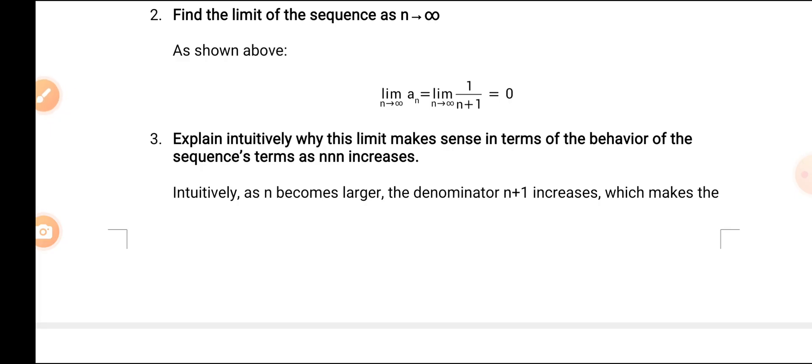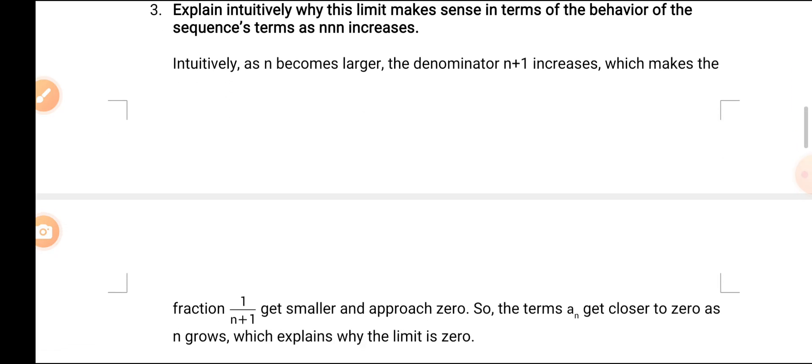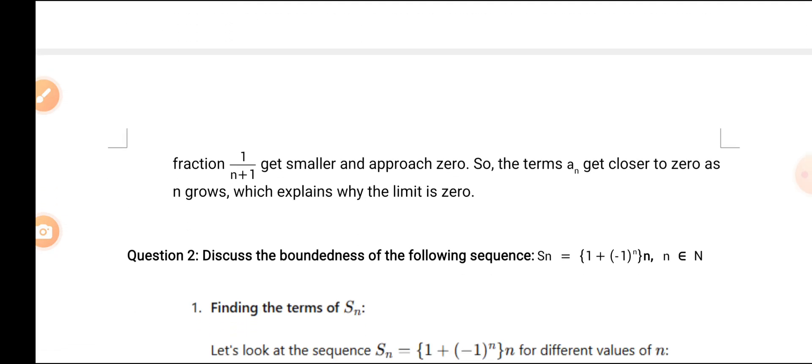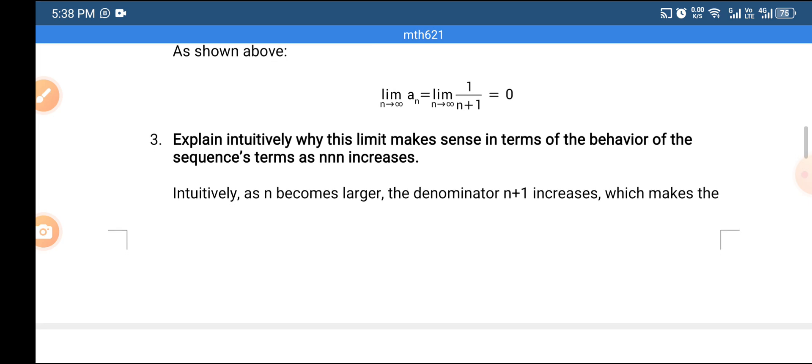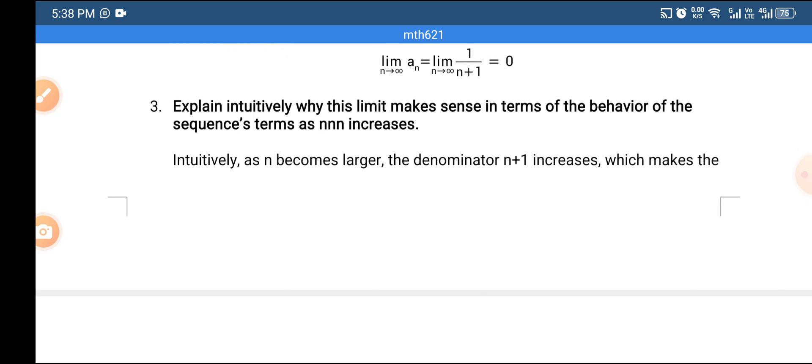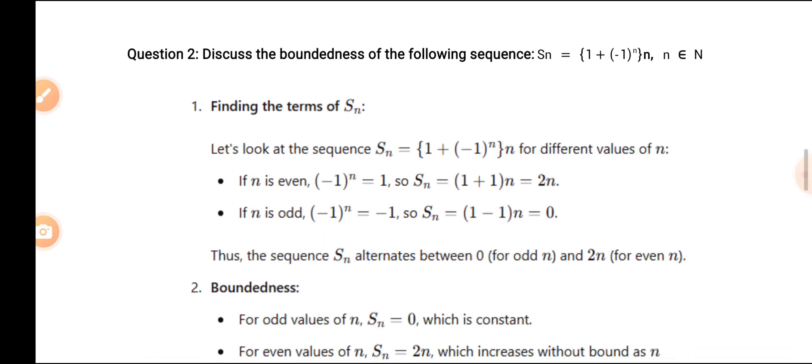For the third part explanation: as n becomes larger, the denominator n+1 also becomes larger, which makes the fraction 1/(n+1) get smaller and approach 0. So the term An gets closer to 0 as n grows, which explains why the limit is 0. This demonstrates the sense in which the limit is 0 as n increases.